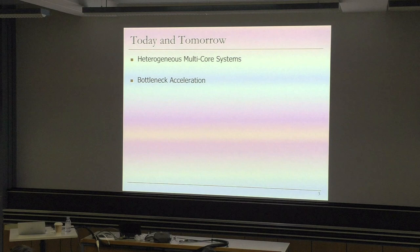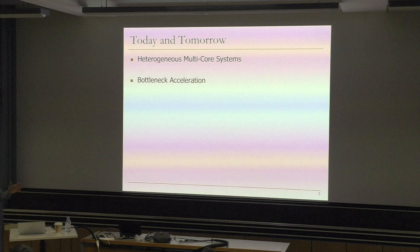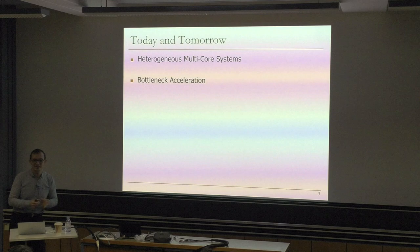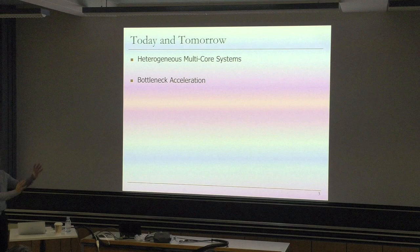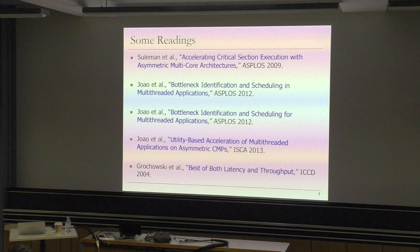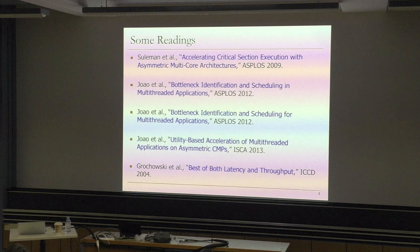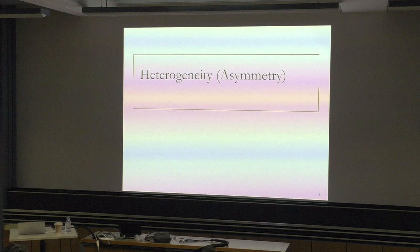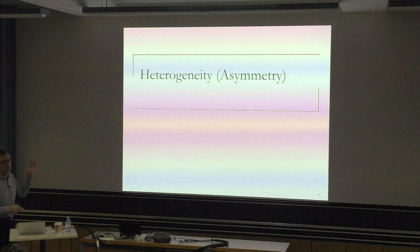If your bottleneck requires more resources than the homogeneous resource, too bad - you're limited to that resource. But if you have heterogeneous resources, when you get to a bottleneck, you can dedicate a lot more, or bigger resources to it. These are some readings - there's an Intel paper that talks about getting the best of both latency and throughput, published in ICCD 15 years ago. So basically we're going to talk about heterogeneity, also called asymmetry - I'll use these words interchangeably.